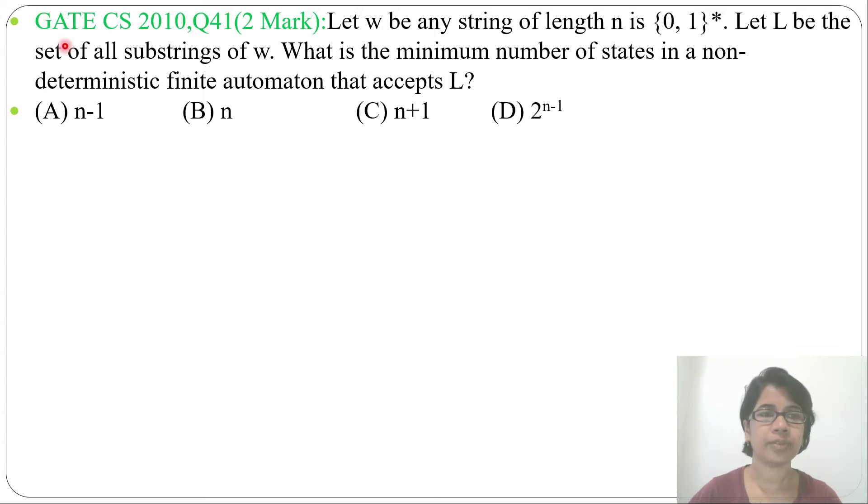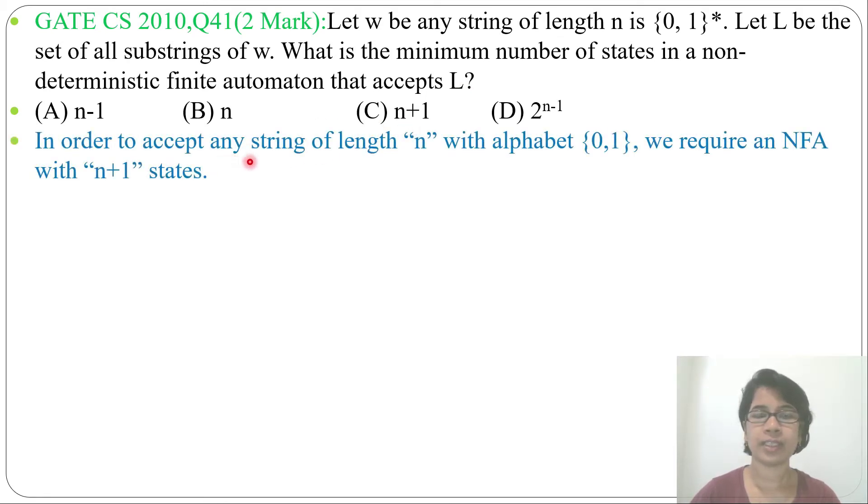Hi, let's solve one previous question of TOC. This question was asked in GATE 2010, question number 41. It is an automata question. Let w be any string of length n in {0,1}*. Let L be the set of all substrings of w. What will be the minimum number of states in a non-deterministic finite automata that accepts L? There are four options given.